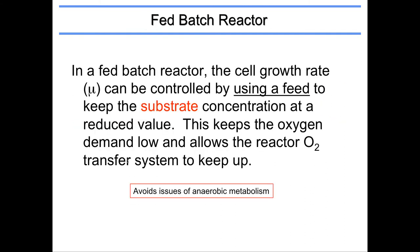So I'll just read from the screen here about the fed batch reactor. In a fed batch reactor, the cell growth rate can be controlled using the feed to keep the substrate concentration at a reduced value. In other words, if you want to minimize or slow the growth down, sometimes that actually helps the productivity of the product that you're trying to do. And so you can actually then prevent it from experiencing oxygen limitation. And that can be very important because you don't want the cells to go anaerobic because when cells go anaerobic physiologically, they're very, very different. This is kind of like when you go running and you have the lactic acid buildup in your legs.